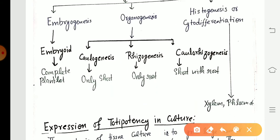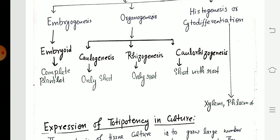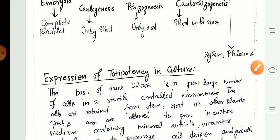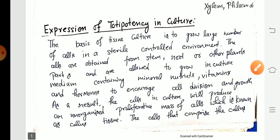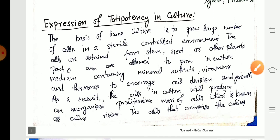From cytodifferentiation, xylem and phloem are generated. Xylem and phloem are the vascular elements of the plant. Further, I will discuss about the expression of totipotency.